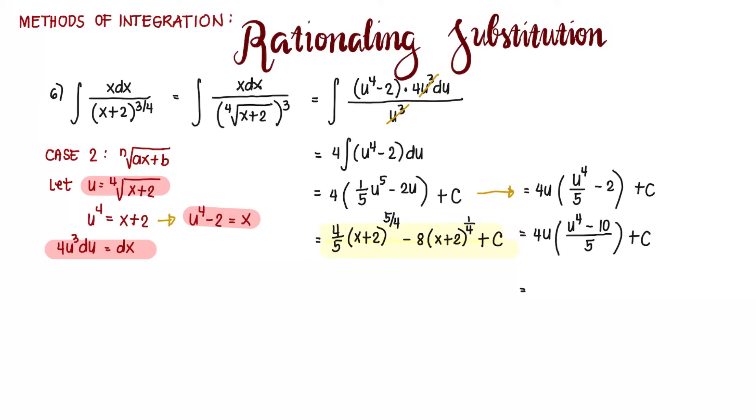Now we substitute: u is the 4th root of x plus 2, and u^4 is x+2. So (4/5) times the 4th root of (x+2) times what's left inside the parenthesis is (x - 8) plus C. That's another way of expressing the answer for number 6 under case number 2 for rationalizing substitution. We will solve example number 7 in the next video.